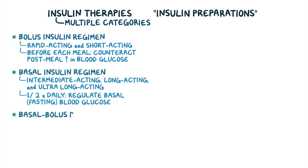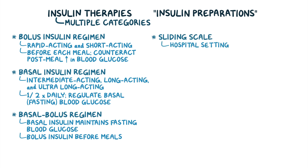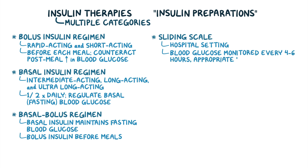There's basal bolus regimen, where a basal insulin is used to maintain fasting blood glucose levels, and a bolus insulin is taken before meals. Lastly is the sliding scale regimen. This regimen is typically reserved for hospital settings, where a person's blood glucose level could fluctuate rapidly due to metabolic stressors like infections or other illnesses. In this regimen, every four to six hours, the person's glucose level is measured and an appropriate dosage of short-acting insulin is given.